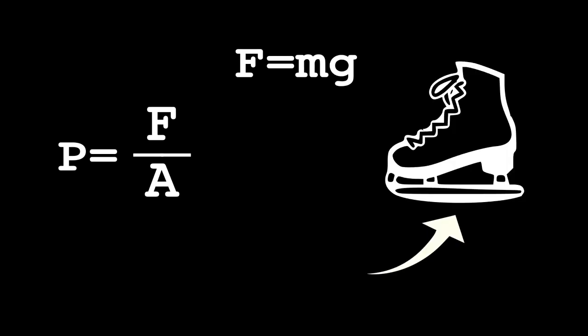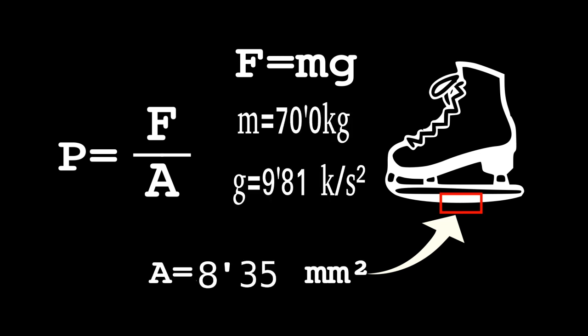The pressure is given by the applied force divided by the area over which it is applied. Let's assume the case in which the only external force is the gravitational one. Let's also consider that the pressure is being applied by the tip of the blade with an area of 8.45 mm². For an individual with a mass of 70 kg, the resulting total pressure is about 0.81 kPa.